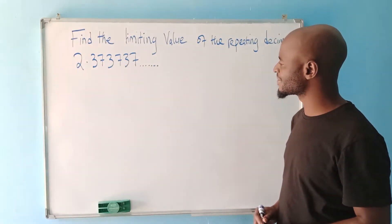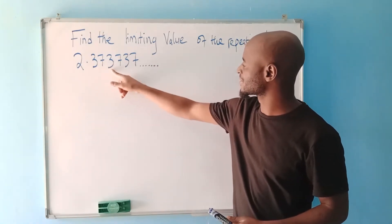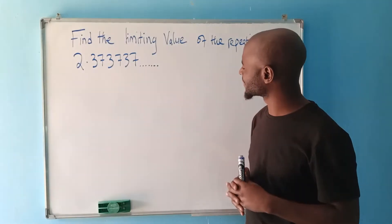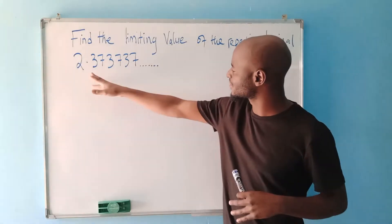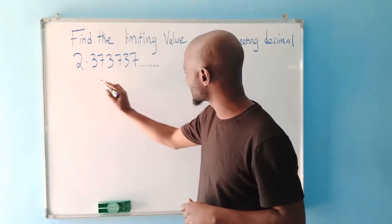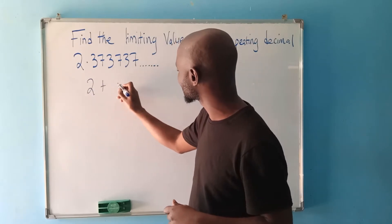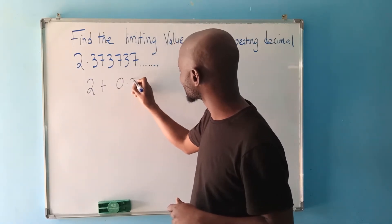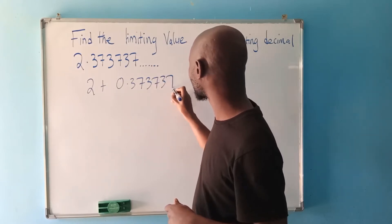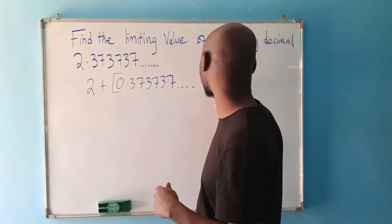So when you look at this number, the numbers that are repeating are these. So we need to find the limiting value. We need to look at what is repeating.